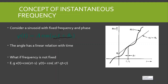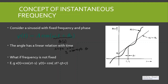The angle theta of t has a linear relation with time, where the slope is equal to omega c and the y-intercept is theta naught. So in this case we have constant frequency, and the angle is varying linearly with time.